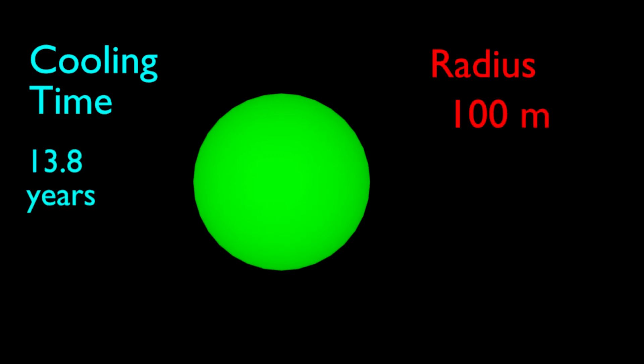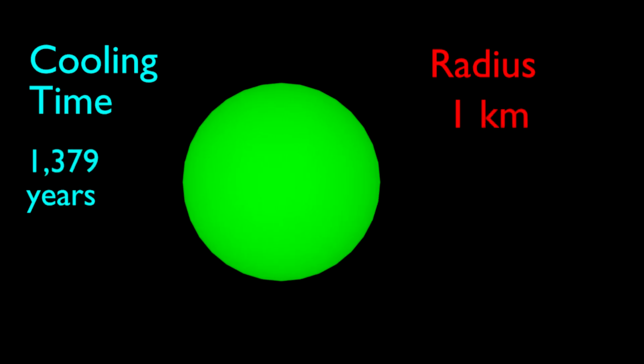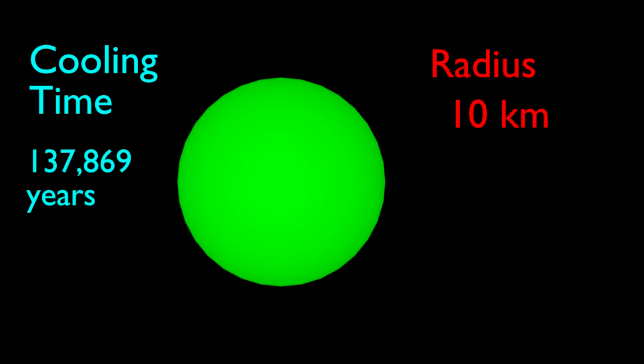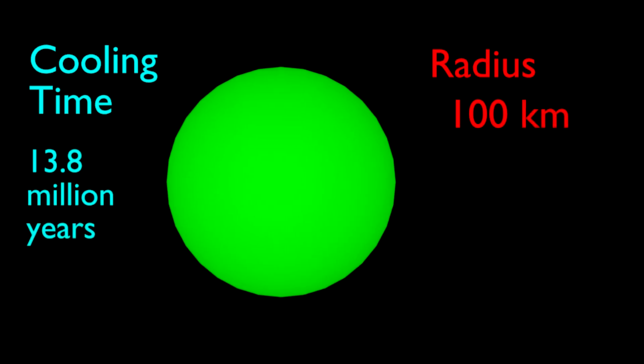Increase the radius to 10 meters and the cooling time of the ball goes up to about a month. For a 100 meter ball of iron, the cooling time is 14 years. For an iron ball with a radius of 1 kilometer, the cooling time is 1300 years.